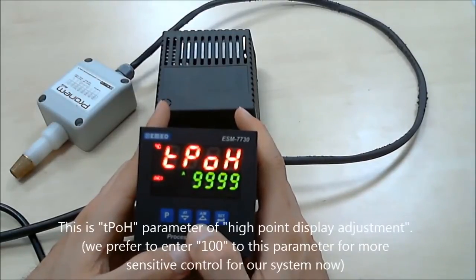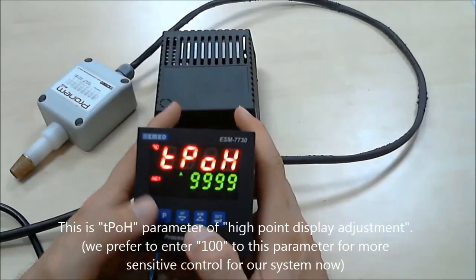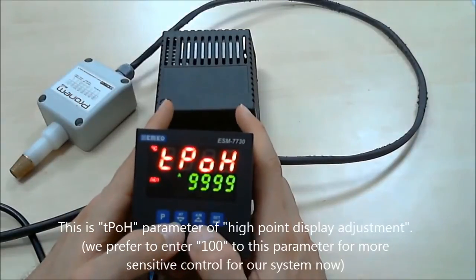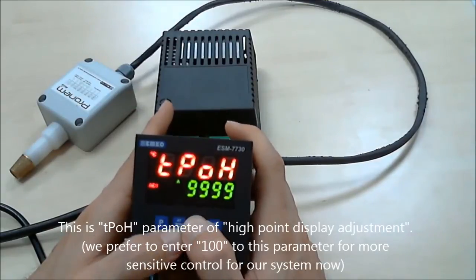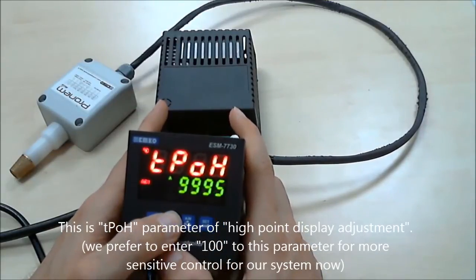And this is the high point display adjustment parameter. We select 100 for this parameter and scroll.